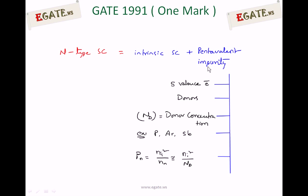Pentavalent impurity, as the name says, consists of 5 valence electrons. Out of those, 4 valence electrons are used for sharing to get a stable configuration — like in a covalent bond. The one extra electron becomes a free electron at higher temperatures, contributing to current. So one pentavalent atom gives one free electron. If you add 10 pentavalent atoms, that gives 10 free electrons. The number of free electrons — majority carriers — in N-type equals the number of pentavalent impurities added.